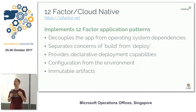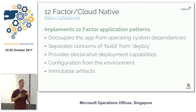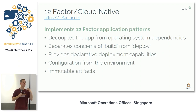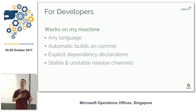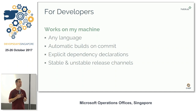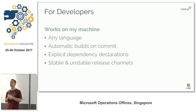Habitat is a 12-factor application framework. We want to decouple your application from your operating system and separate your build from your deploy. So your applications are portable, they get their configuration from the environment, and you're building immutable artifacts. Developers love this — they can build in any language and always have the latest up-to-date dependencies. They get automatic builds on commit, and they get stable and unstable release channels.